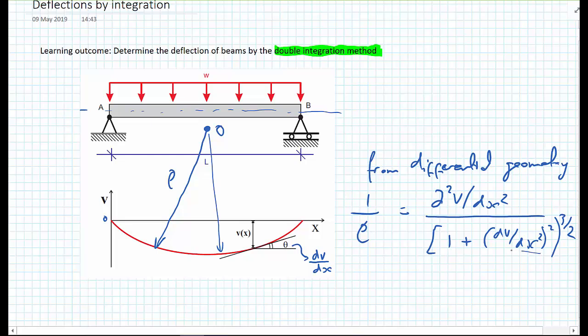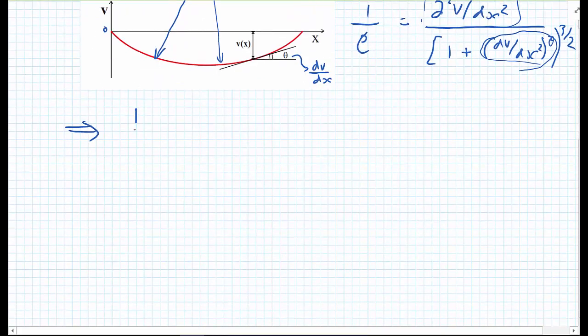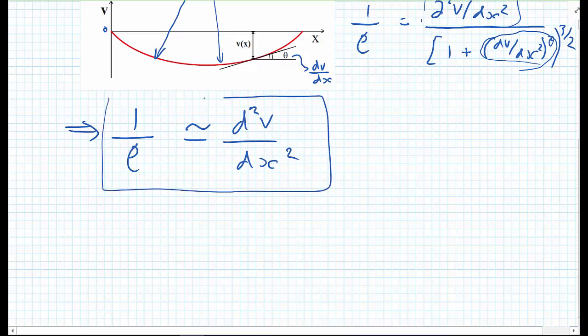So this term here in the brackets is going to be very small. So we've got the squared term, this will be small but non-negligible, this term here on the top, leaving us with just one on the numerator, on the denominator. So we therefore get, and we're going to use this now, 1/rho is approximately equal to d²V/dx². And we're just going to use this identity rather than going into the detailed derivation of where this identity comes from.